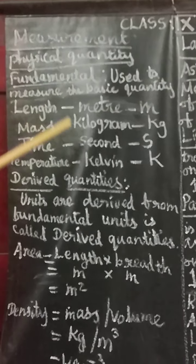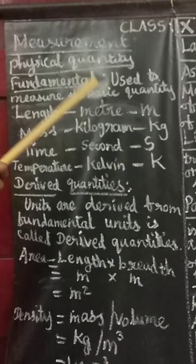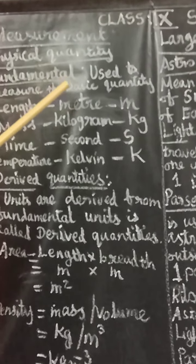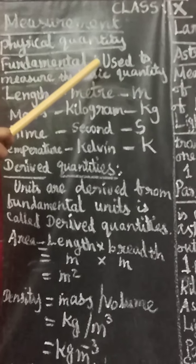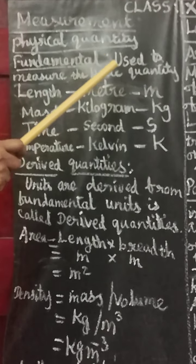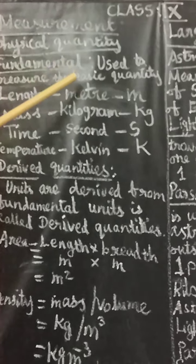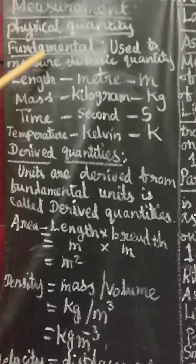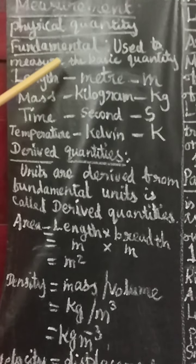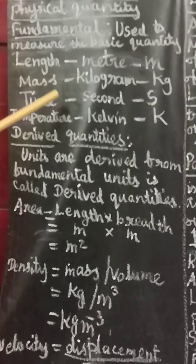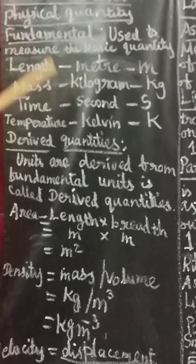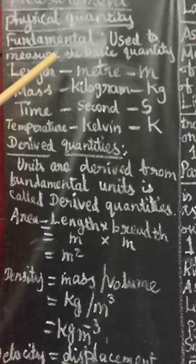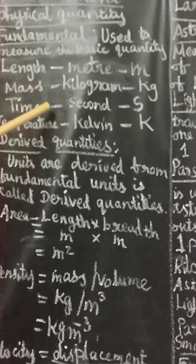There are two types of physical quantities: fundamental quantities and derived quantities. Fundamental quantities are used to measure the basic quantities. The basic quantities you have to study are length, mass, time, and temperature. Measuring these basic quantities is called fundamental quantity.